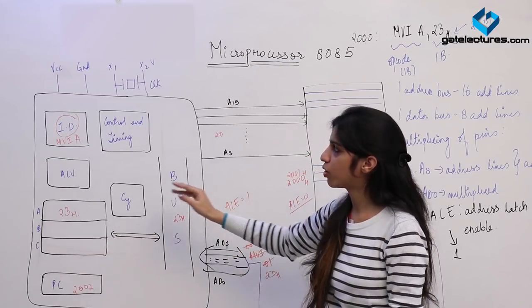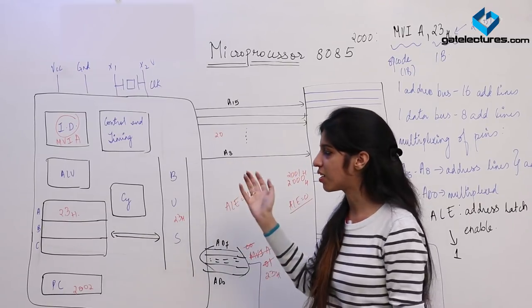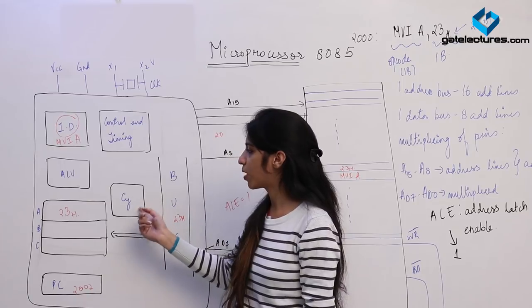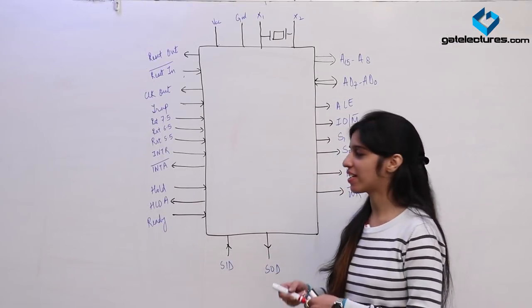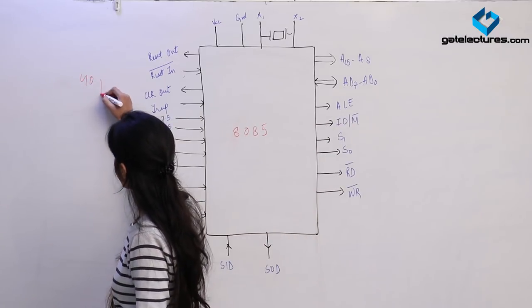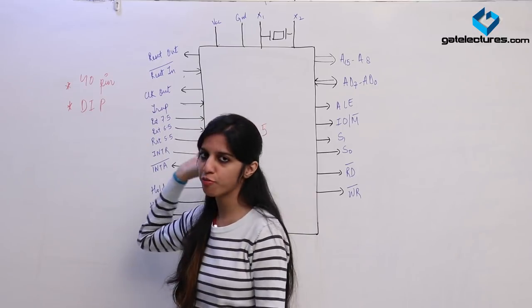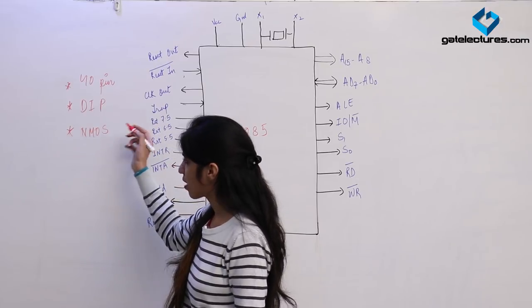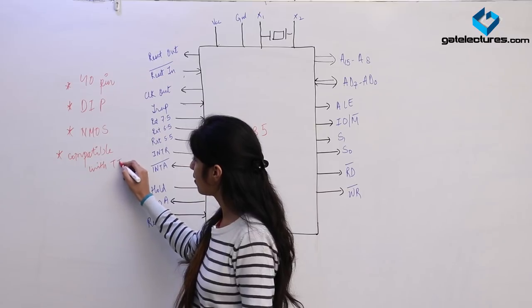This is how any instruction is executed by the microprocessor. Now let's look at the pin diagram. The 8085 is a 40-pin IC with a Dual Inline Package (DIP). It works on NMOS technology, compatible with TTL logic. It operates at 3 MHz clock frequency with a 5-volt supply. Pins A15 to A8 represent the higher-order address bus — these 8 pins are used only as address lines.